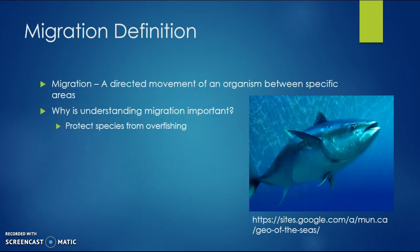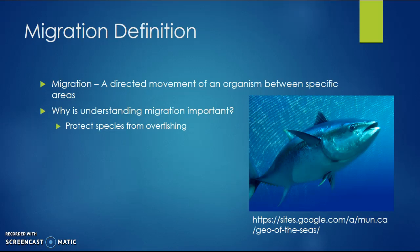Migration is defined as a directed movement of an organism between specific areas. It is important to understand fish migration because we need to protect our species from being overfished. If we are able to protect our species by knowing where they're migrating to, we can create fishing regulations and lower overfishing rates.